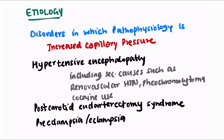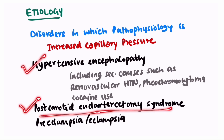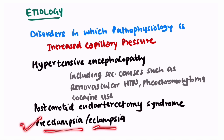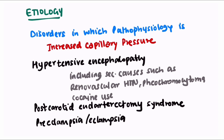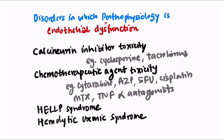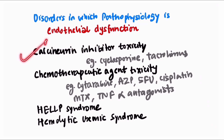Disorders in which the pathophysiology is increasing capillary pressure include hypertensive encephalopathy, post-carotid endarterectomy syndrome, and preeclampsia or eclampsia. Under hypertensive encephalopathy, secondary causes such as renovascular hypertension, pheochromocytoma, and cocaine use are also included. Disorders in which the pathophysiology is endothelial dysfunction include calcineurin inhibitors, chemotherapeutic agents, HELLP syndrome, and hemolytic uremic syndrome.